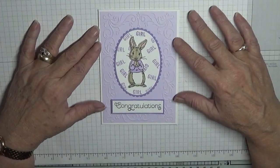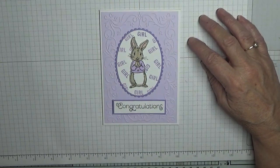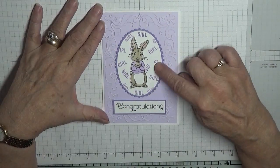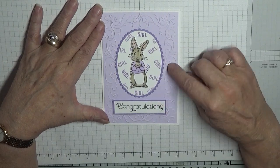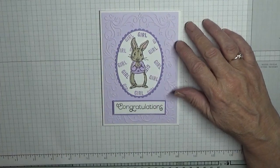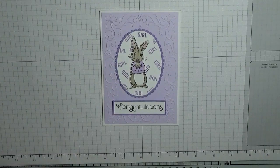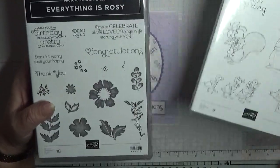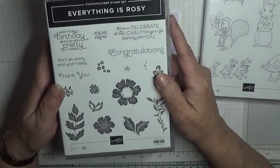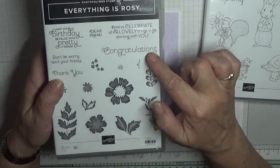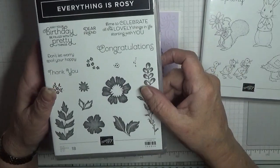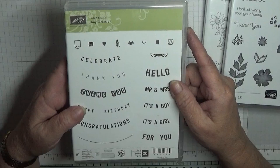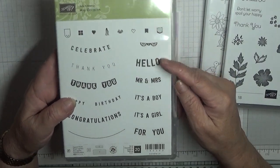Hello everybody, Georgia Burns here. Today I'd like to show you how I made this baby card. Obviously it's for a little girl because it says girl. To make this card I used the stamp sets Fable Friends and Everything is Rosy just for the word congratulations, and this very old celebration set.